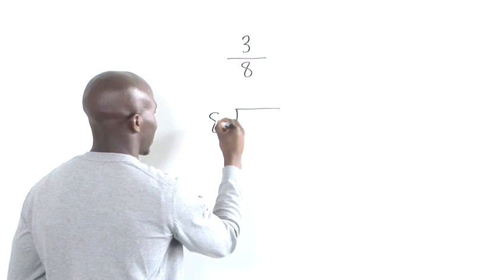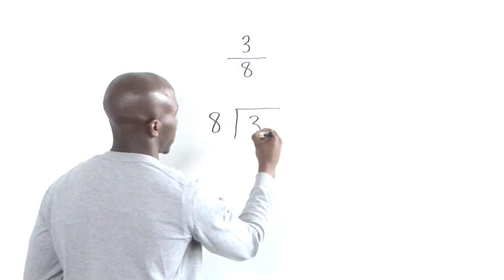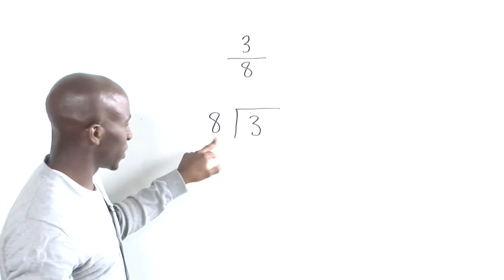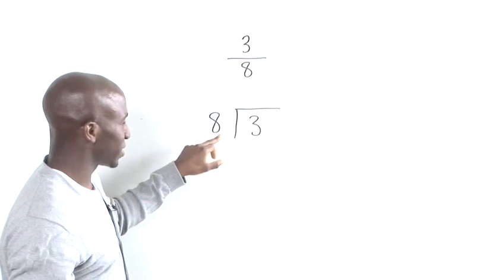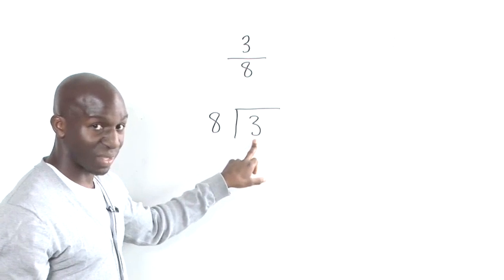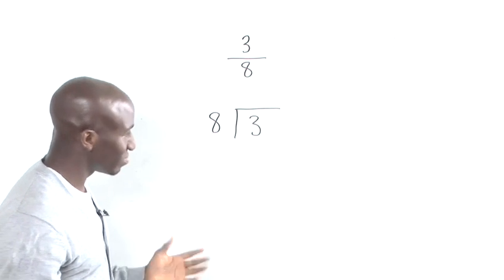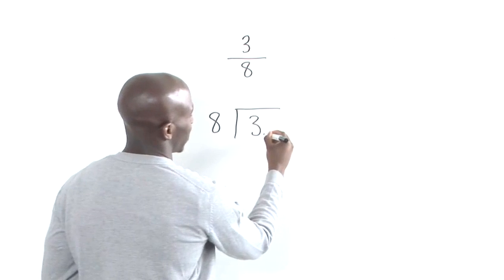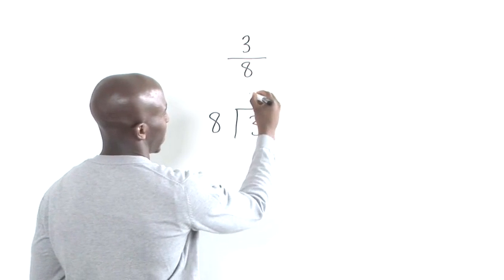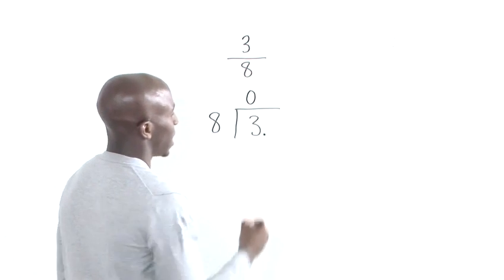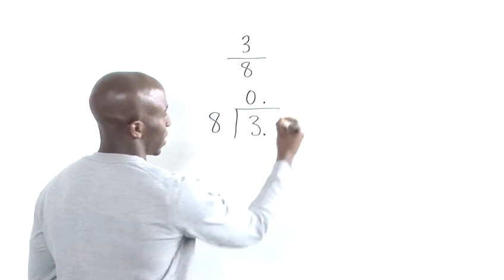So, the 8 goes out here and the 3 goes here. So, the first thing you would want to do is see how many times 8 goes into 3. And you can see that's a bit, it's not going to happen. So, put the decimal point there and the 0 there. And also, the decimal point goes there.